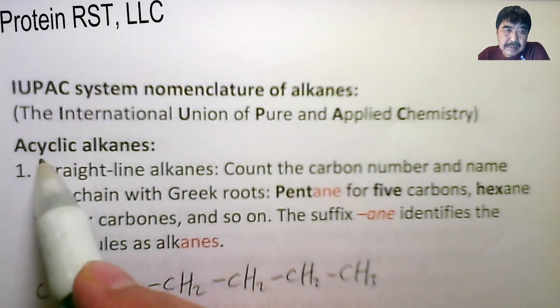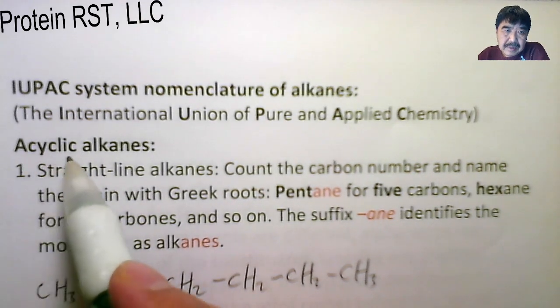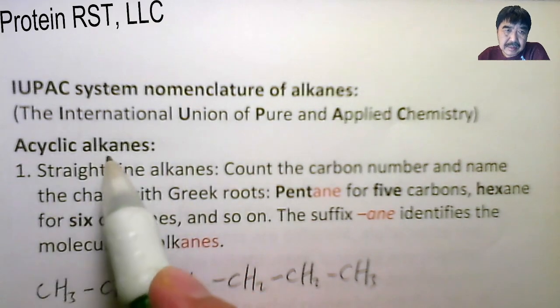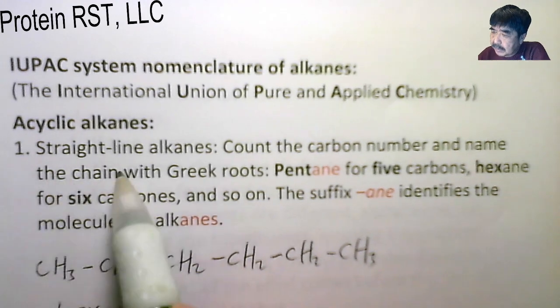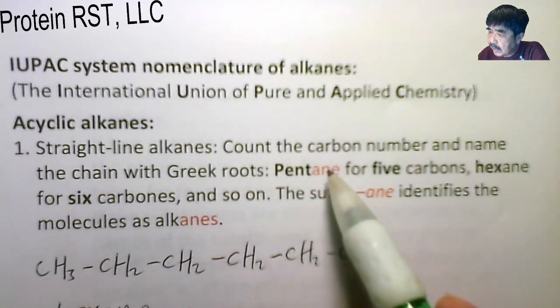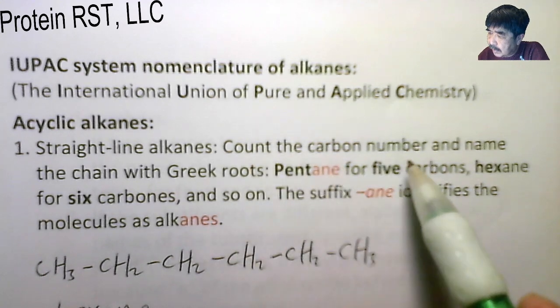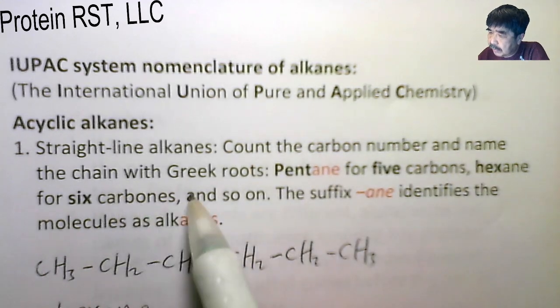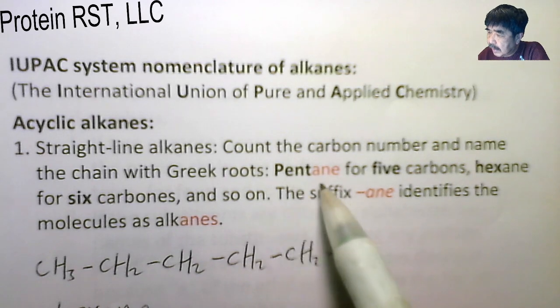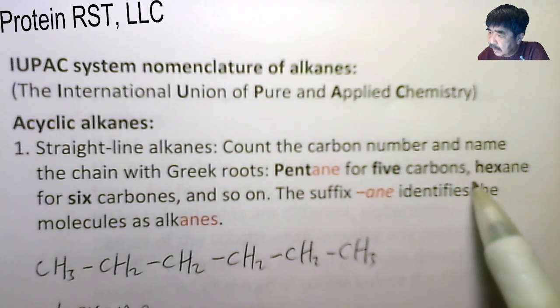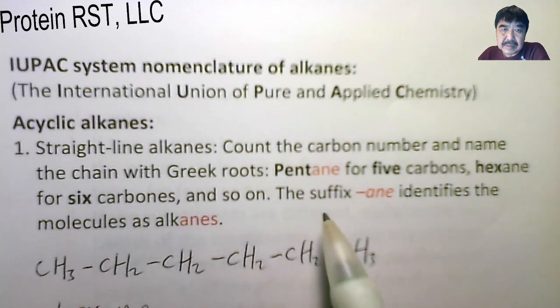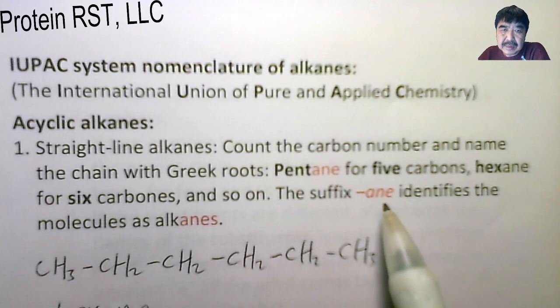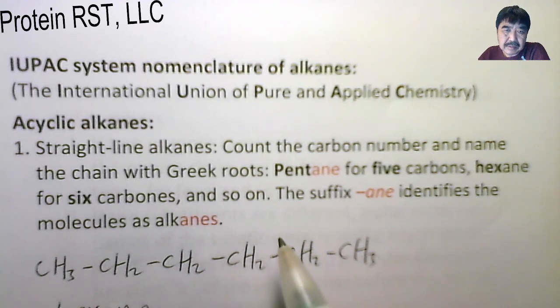First let's take a look at the acyclic alkanes. For straight-line alkanes, count the carbon number and name the chain with Greek roots. Pentane for five carbons, hexane for six carbons, and so on. The suffix A-N-E identifies the molecules as alkanes.